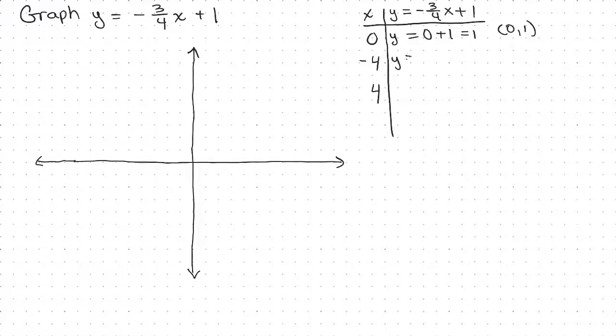What about if you put in -4? I'm going to put -3/4 times -4, which I'll write as -4/1 plus 1. Notice I have a negative times a negative, that's going to be positive. And notice how these 4s are going to cancel - I designed it that way. So I ended up with 3 plus 1, which is 4. So the ordered pair is (-4, 4).